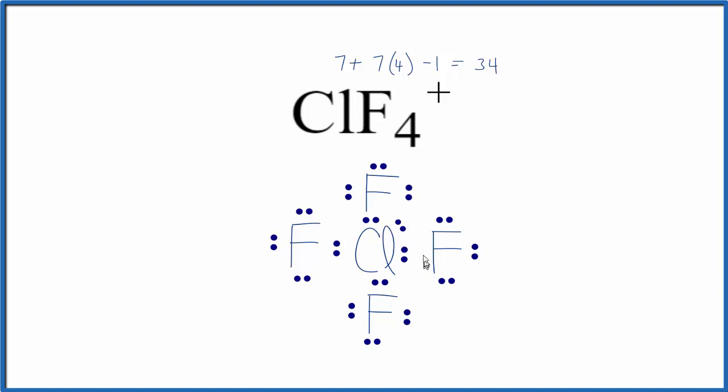So now the chlorine, it has 10 valence electrons. It's still sharing these two with the fluorine. That's the chemical bond. But it's okay that it has 10. It can have an expanded octet.